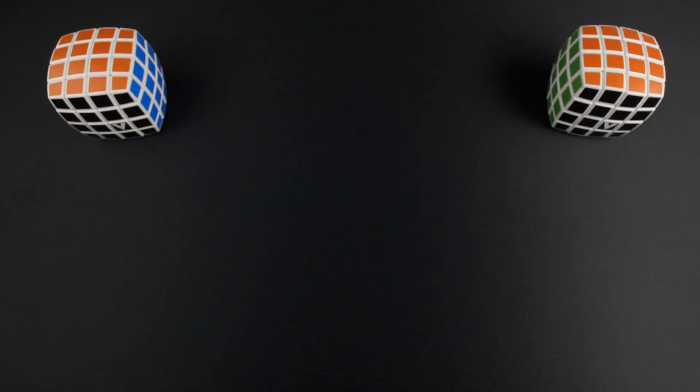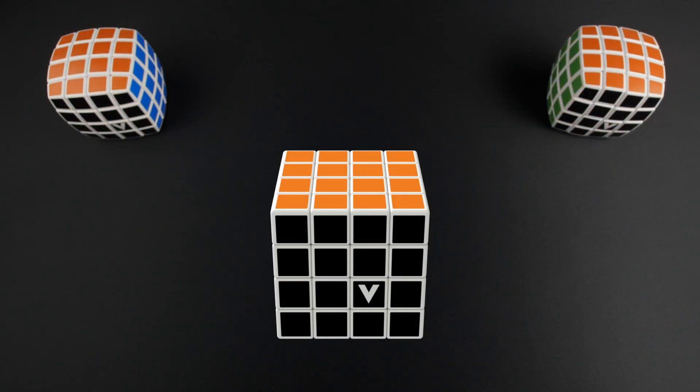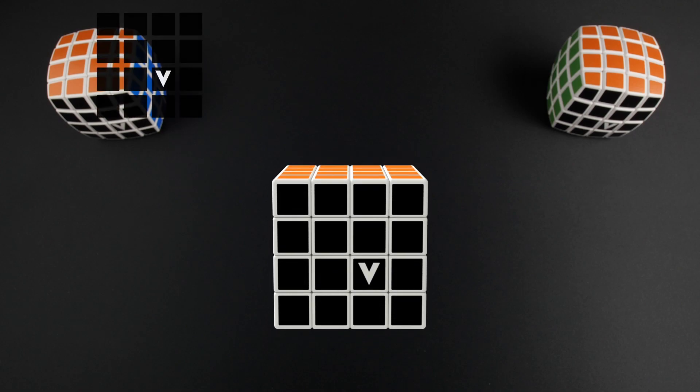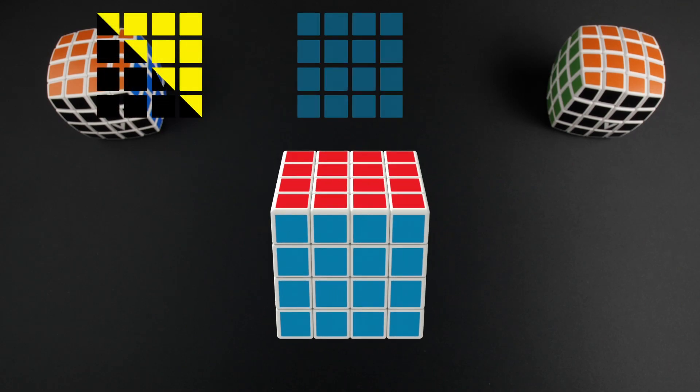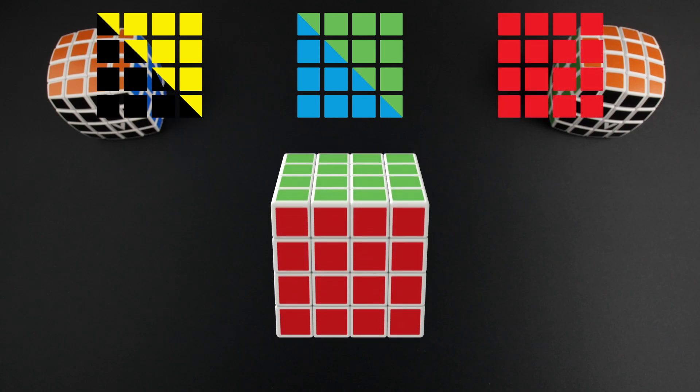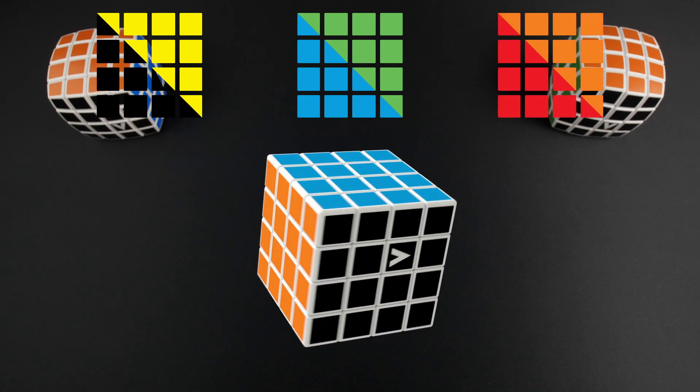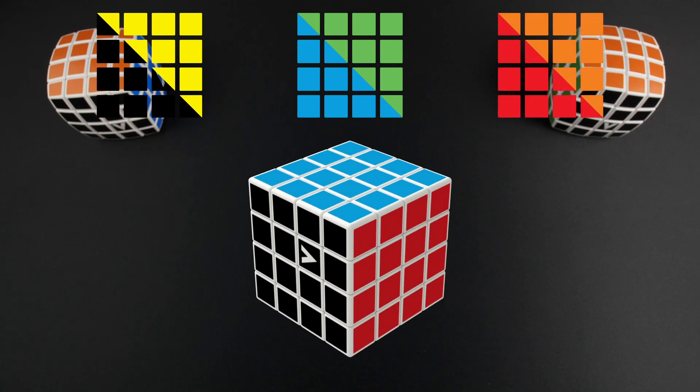Let's return to the 4x4. As you can see, the color scheme is the same. Black is opposite of yellow, blue is opposite of green, red is opposite of orange, and black, blue, and red are positioned in a clockwise orientation.